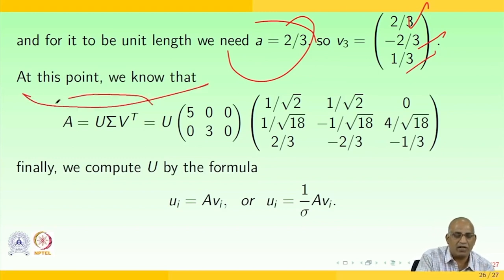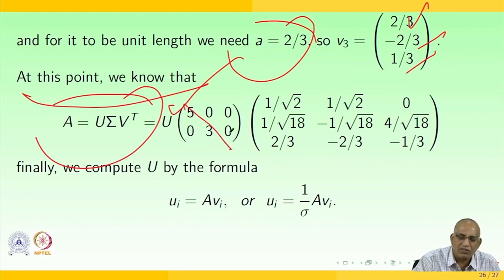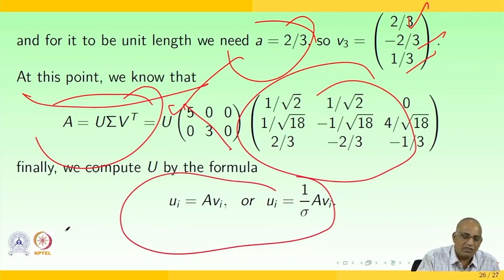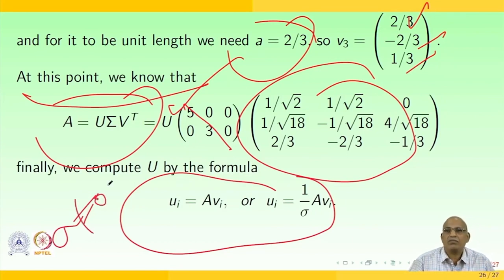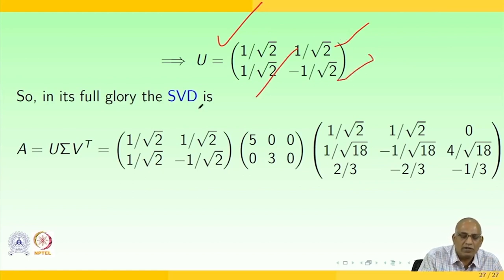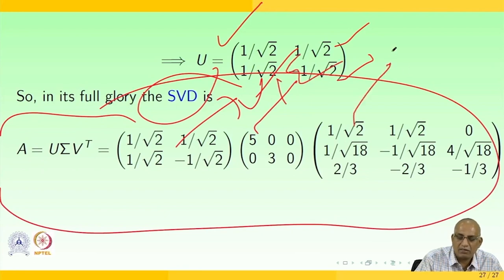At this point we know A = UΣVᵀ. The matrix U is computed by uᵢ = (1/σᵢ)Avᵢ for σᵢ ≠ 0, giving U = [1/√2, 1/√2; 1/√2, −1/√2]. The matrix Σ has entries [5, 0, 0; 0, 3, 0] and Vᵀ is formed from the eigenvectors. In full, the singular value decomposition is written out as the product U · Σ · Vᵀ with the matrices computed above.